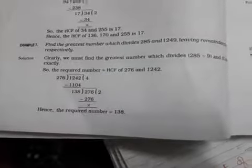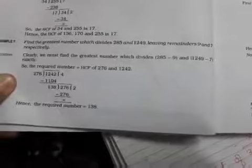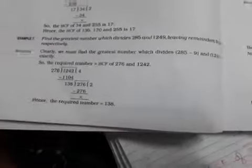Next, I took one example from your book: find the greatest number which divides 285 and 1249 leaving remainders 9 and 7 respectively. So what we have to do is find the greatest number. Whenever it is written 'greatest number,' you have to find HCF.